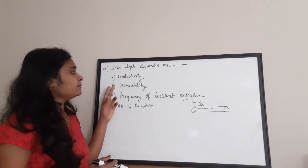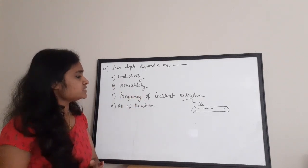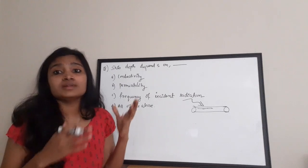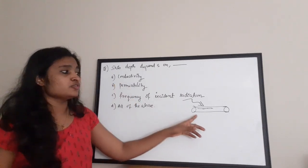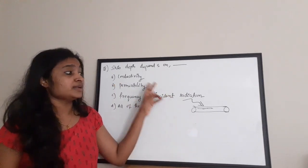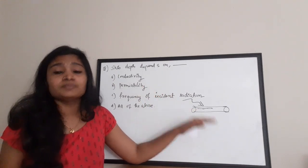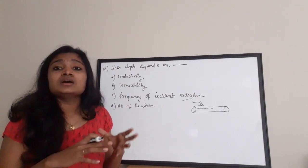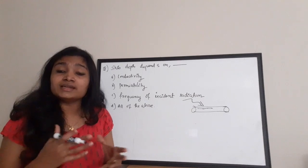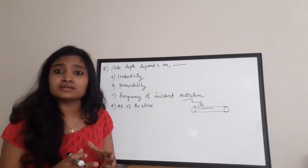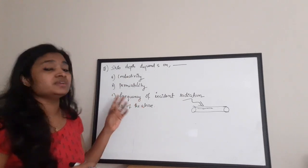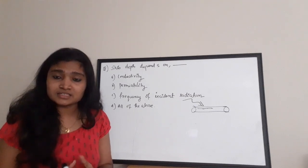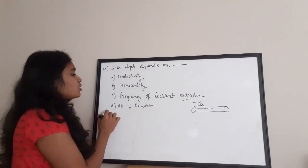So skin depth depends on A) conductivity, B) permeability, and C) frequency of incident radiation. The attenuation of the electromagnetic wave depends on the conductivity of the material, the permeability of the material, and the frequency of the incident wave. All these factors affect the skin depth — that is, how far into the conductor the wave penetrates before attenuating. The correct answer is option D: all of the above.